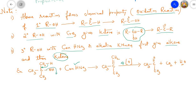For example, tertiary butyl alcohol treated with concentrated HNO₃: the –OH and a hydrogen are lost as water, giving an alkene. This alkene then undergoes oxidation — one carbon leaves as CO₂, two hydrogens leave as H₂O, and one oxygen is added — requiring four nascent oxygen atoms overall. So tertiary alcohols on oxidation give first an alkene, and that alkene gives a ketone with the loss of one carbon atom as CO₂.